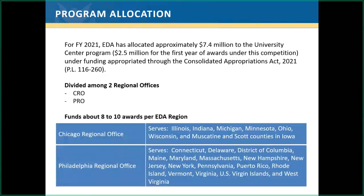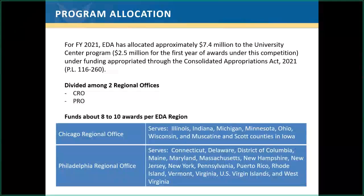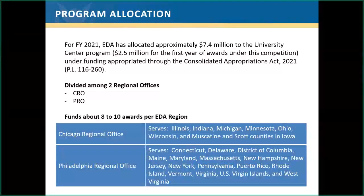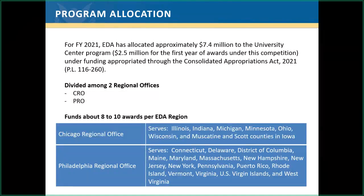The University Center program has been in existence since 1966 and has evolved quite a bit through the years. UCs are funded on a competitive basis for a five-year period of performance, during which UCs receive funding annually based on their prior year's performance. For FY2021, EDA has allocated about $7.4 million to the UC program, of which about $2.5 million is available for first-year awards divided between the Chicago and Philadelphia regional offices. This generally means about eight to ten awards per EDA region, with awards generally ranging from about $80,000 to $200,000 annually.